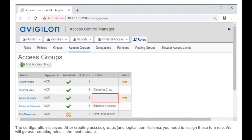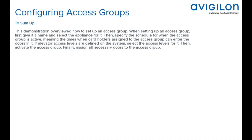After creating access groups, you need to assign these to a role. We will go over creating roles in the next module. To sum up, when setting up an access group, first give it a name and select the appliance for it. Then, specify the schedule for when the access group is active — meaning the times when cardholders can enter the doors in it. If elevator access levels are defined, select the access levels. Then, activate the access group and finally assign all necessary doors to it.